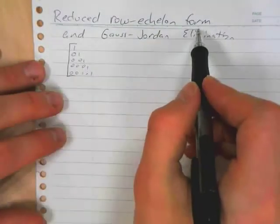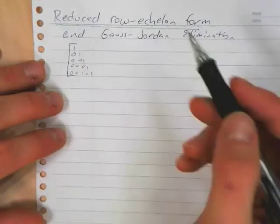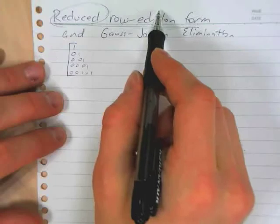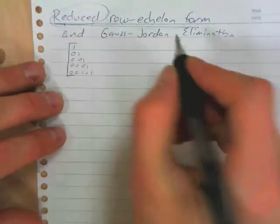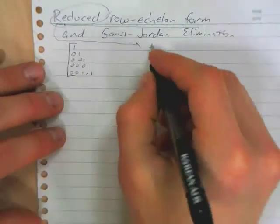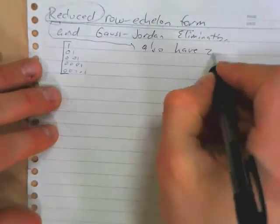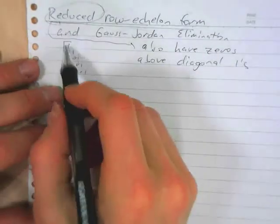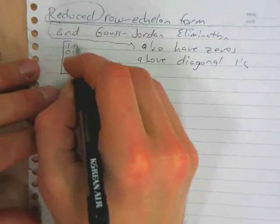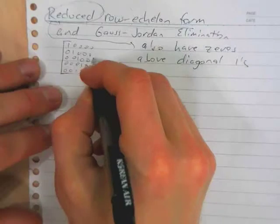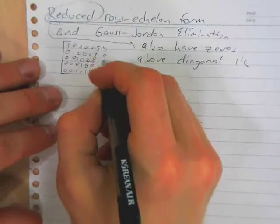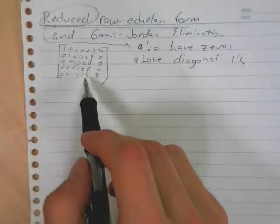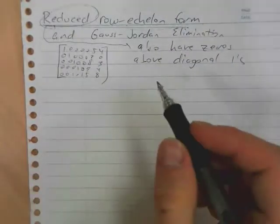Now, reduced row echelon form is even more, well, it's more reduced. There are less numbers in the matrix. What makes it reduced? So a matrix in reduced row echelon form is in row echelon form, but it is also reduced. And what that means, reduced row echelon form means that we also have 0s above those diagonal 1s. So everything above these 1s along the diagonal has to be a 0. And then, you know, there can still be other stuff in our matrix out past that, as long as we've got those 1s on the diagonal entries, and then 0s above and below those 1s, it is in reduced row echelon form.